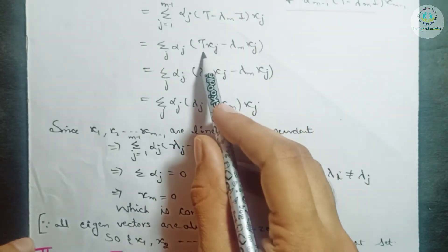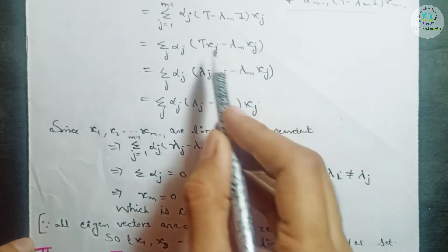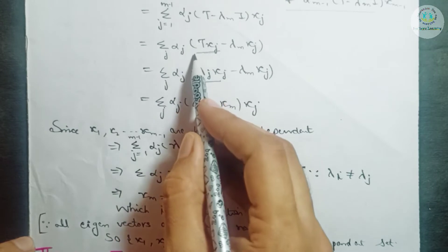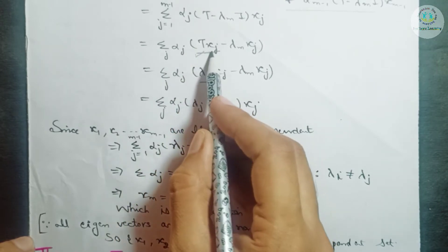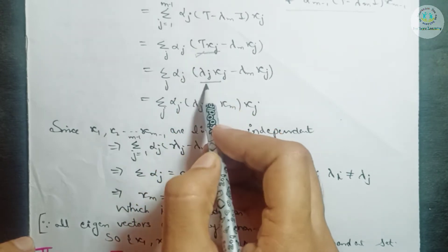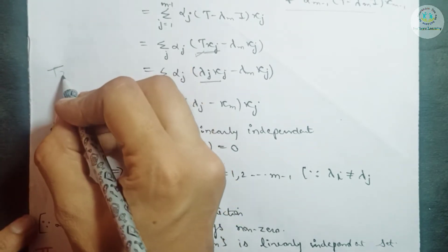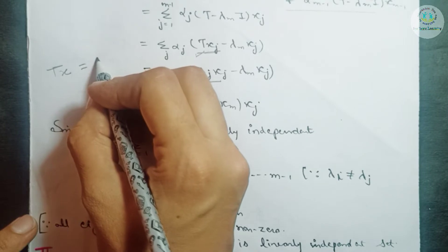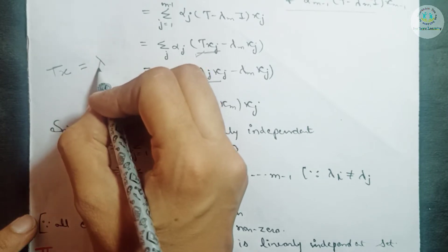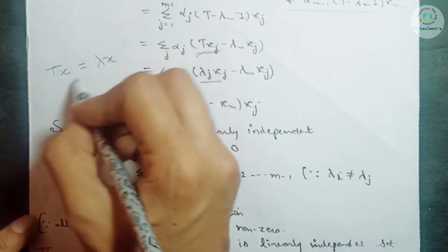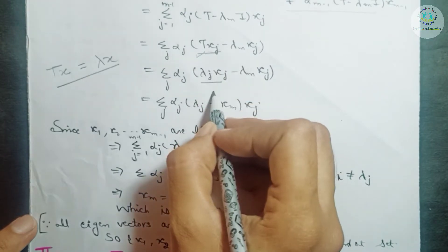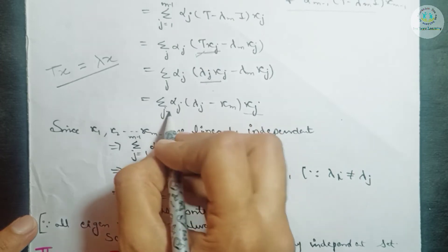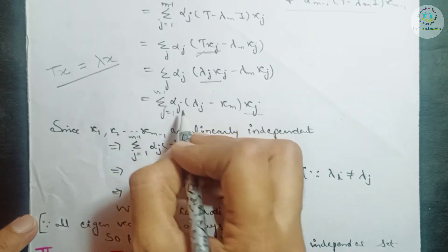Taking xⱼ inside: Txⱼ − λₘxⱼ. Now Txⱼ = λⱼxⱼ, because T is the operator and xⱼ are eigenvectors, and λⱼ is the corresponding eigenvalue — if x is an eigenvector for eigenvalue λ, then Tx = λx. Using this, we can rewrite the expression. Taking xⱼ common again, we get summation from j = 1 to m−1 of αⱼ·(λⱼ − λₘ)xⱼ.